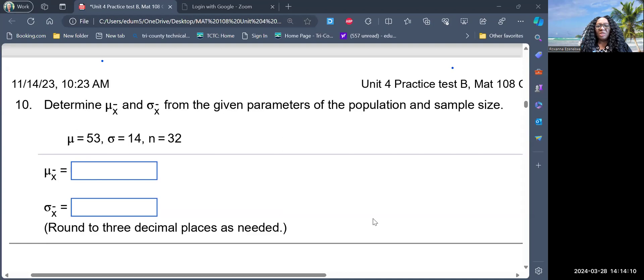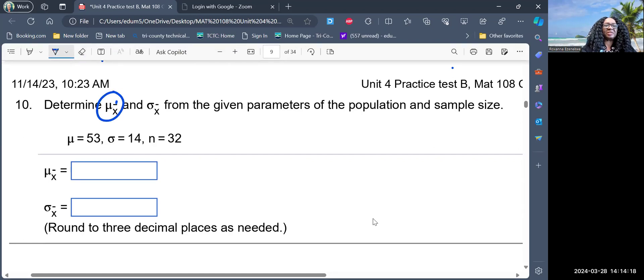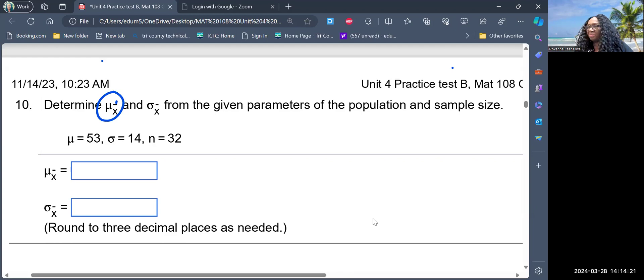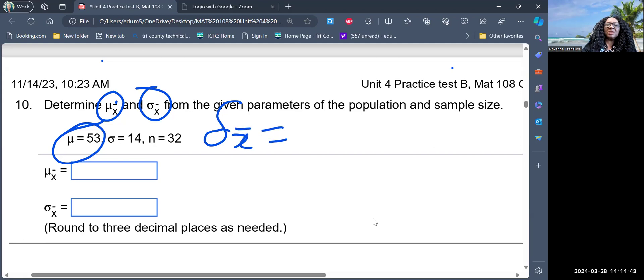I want to make sure that I understand that this function here is the mean of central limit theorem, and this is the standard error. The mean of the central limit theorem is always equal to the mean of the original data, while the standard error is equal to the standard deviation of the original data divided by square root of sample size.